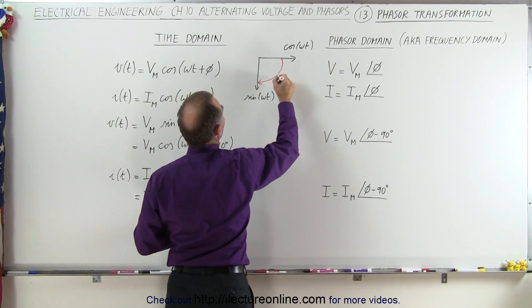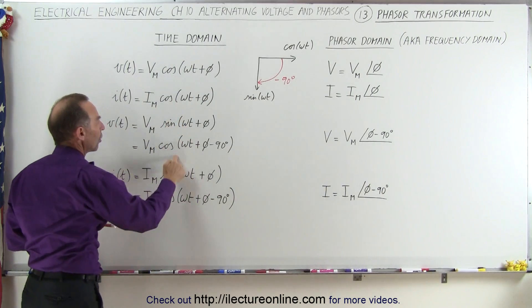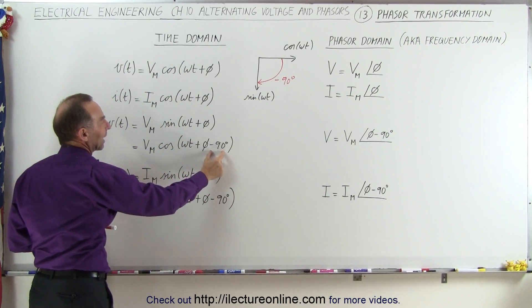So that's why when we go from the sine to the cosine, we simply subtract 90 degrees. So the sine versus the cosine, that's a 90 degree difference.